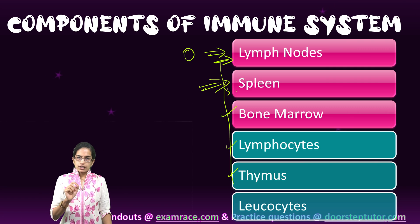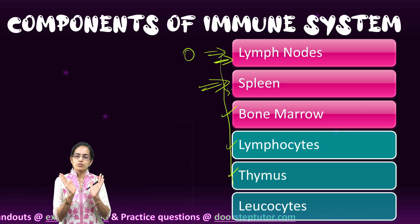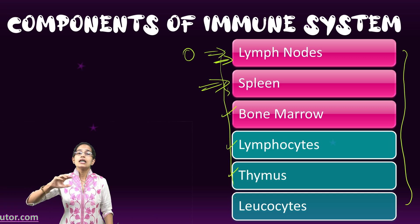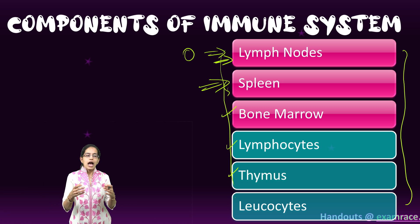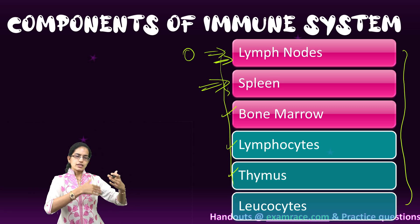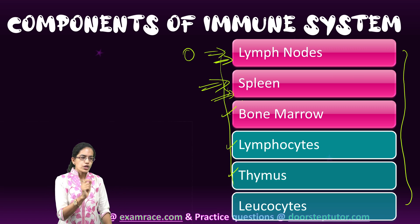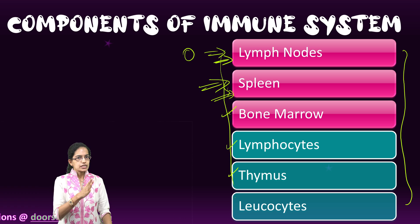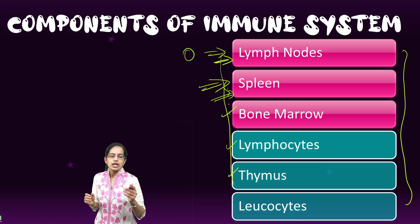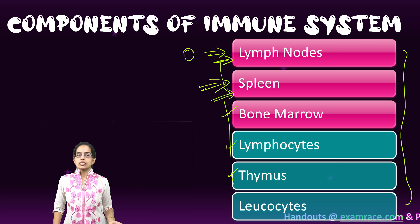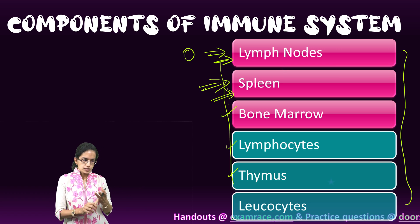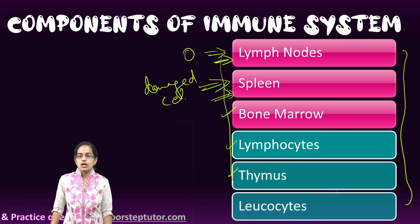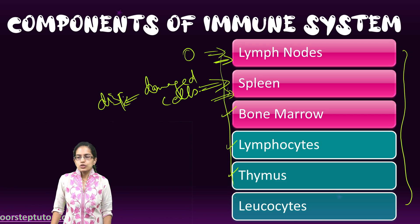The spleen is the largest lymphatic organ in the body. It is located just below the rib and above the stomach, and is responsible for housing white blood cells (WBCs) that fight infection and disease. It also controls the amount of blood in circulation and is responsible for the disposal of any damaged cells.